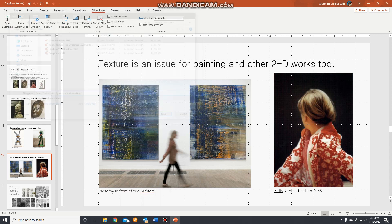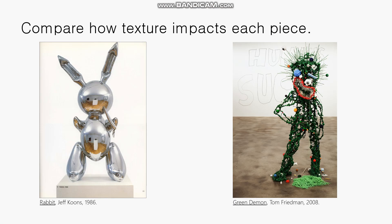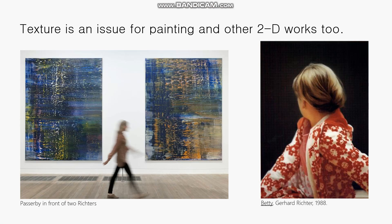Welcome back to our lecture on form. Now we're talking about texture. We ended with a comparison between two works of art and a discussion of Jeff Koons's piece. Texture and surface are also an important part of two-dimensional works, especially paintings. Sometimes paintings can have a lot of physically built-up texture, such as these two paintings by Gerhard Richter.